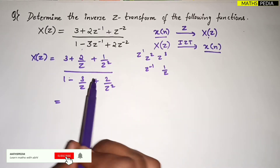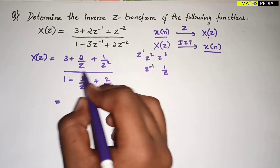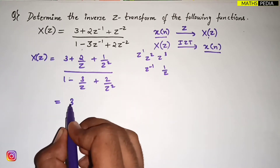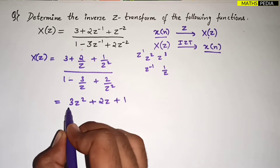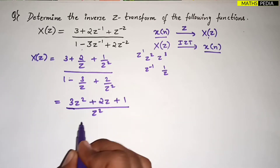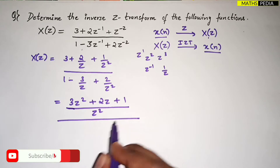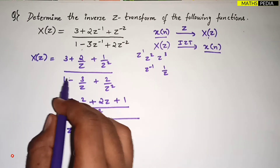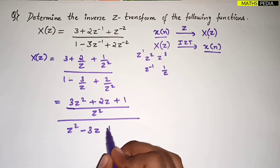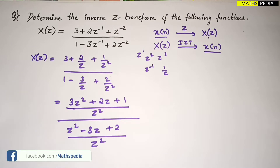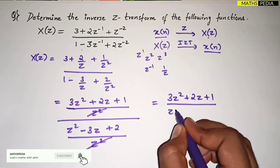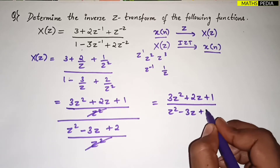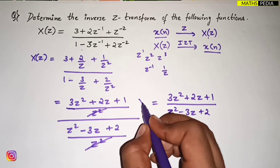Here X(z) equals (3 + 2/z + 1/z²) divided by (1 − 3/z + 2/z²). Taking LCM of z² for the numerator gives 3z² + 2z + 1, divided by z². For the denominator, z² is again the LCM, giving z² − 3z + 2, divided by z². The z² terms cancel, so the simplified form is X(z) = (3z² + 2z + 1) / (z² − 3z + 2).